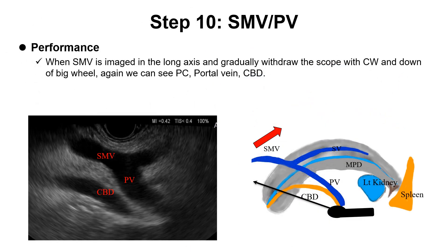Step 10: SMV and portal vein. When the SMV is imaged on the long axis, gradually withdraw the scope with clockwise rotation and big-wheel-down angulation. We can see the portal confluence, portal vein, and CBD.